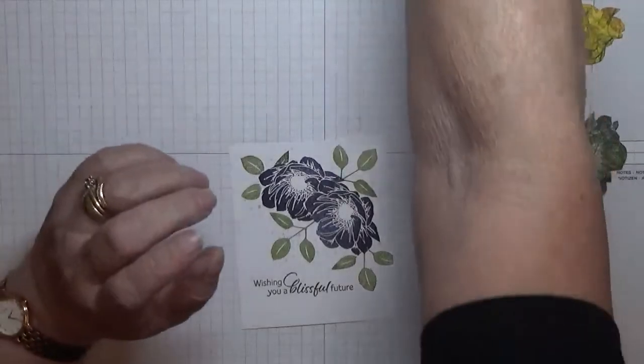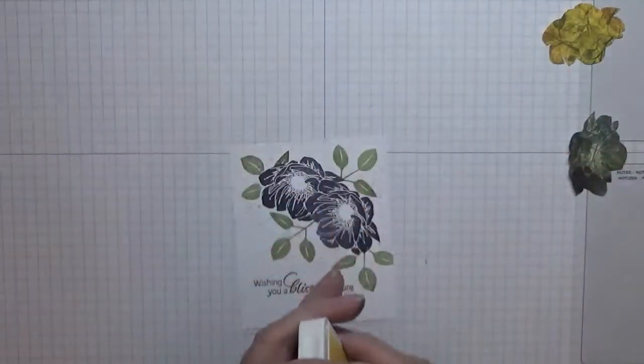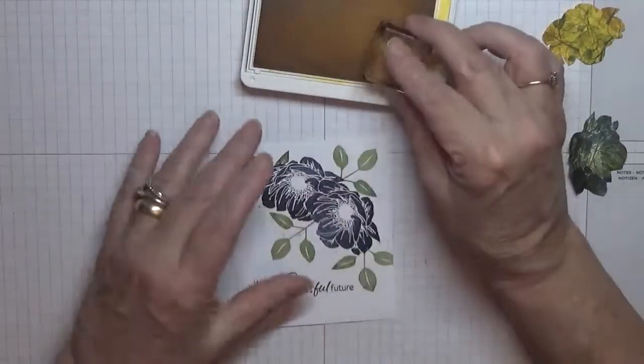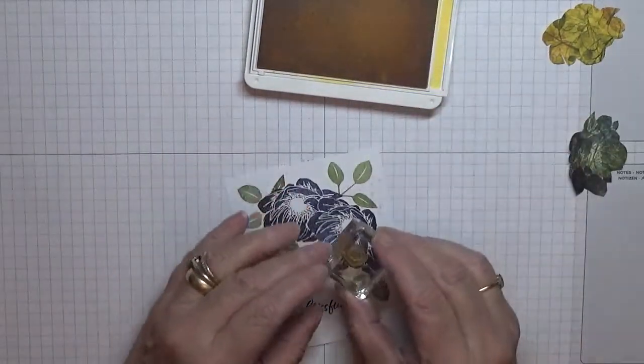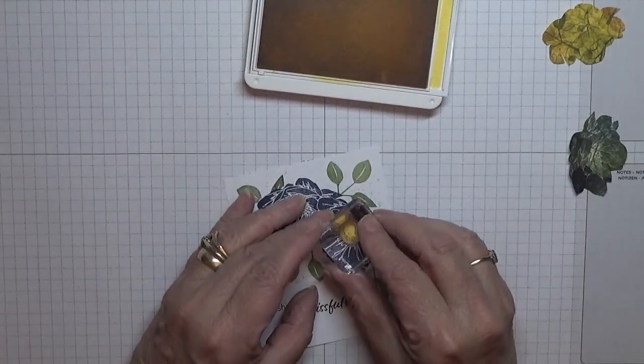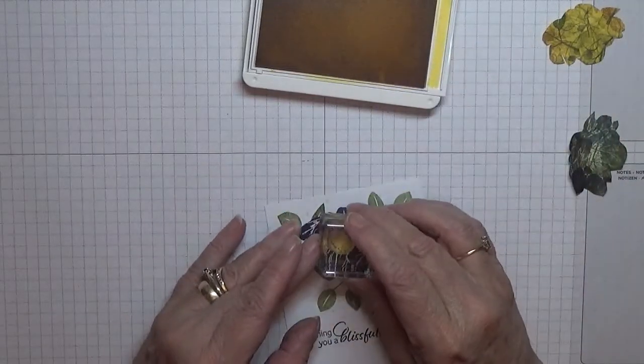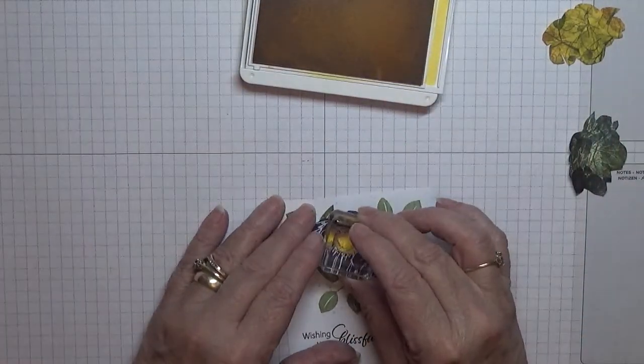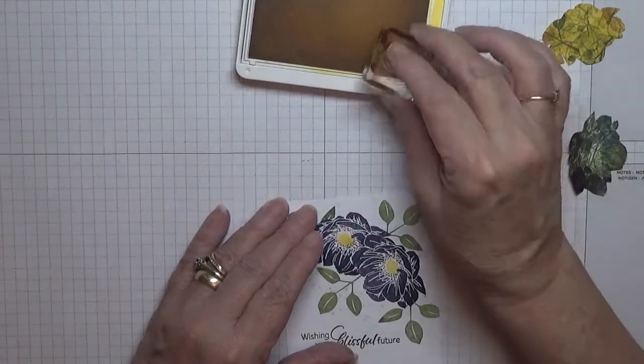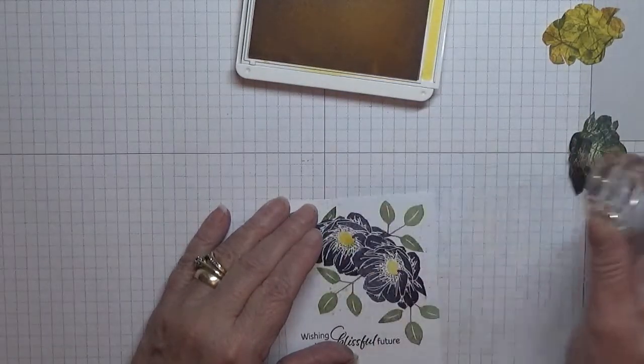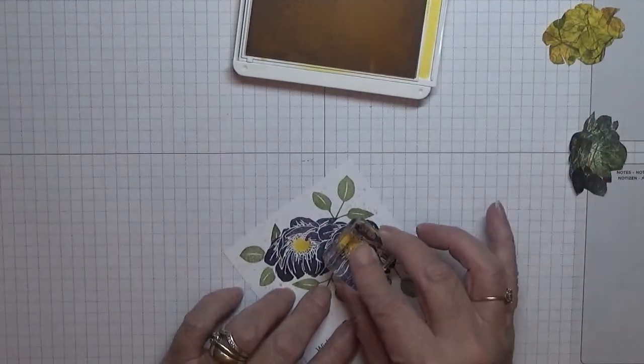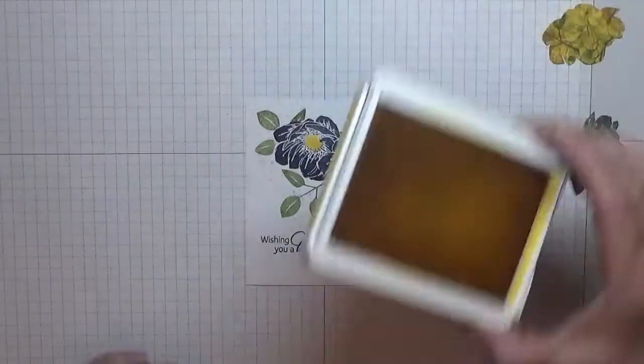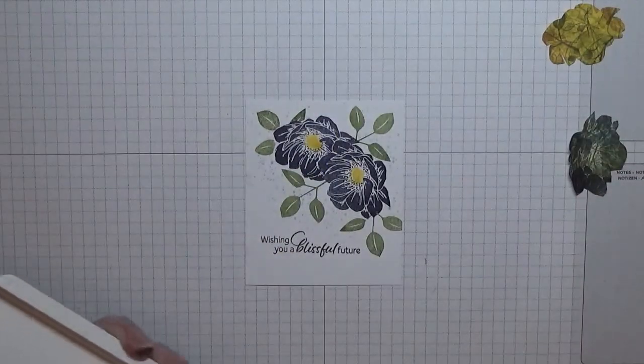I'm going to do our middle bits, so I've got Daffodil Delight here and the center. We're going to pop that just like that in there. And that is our front done.